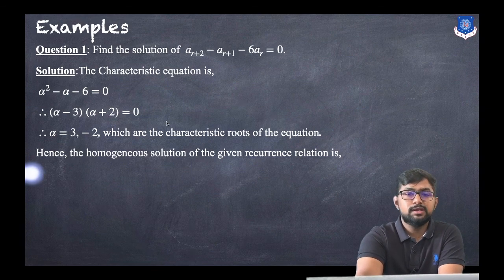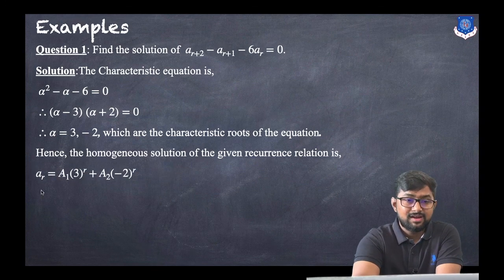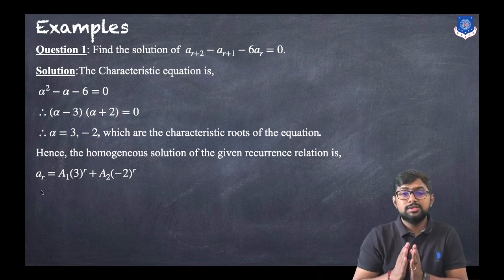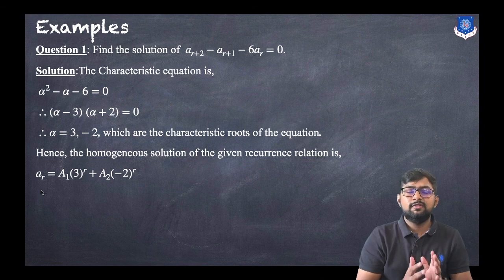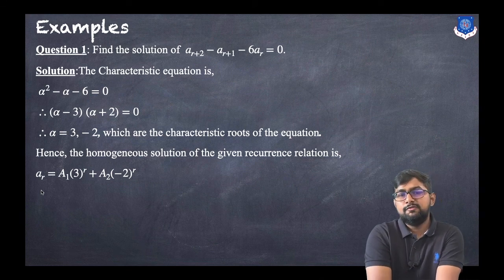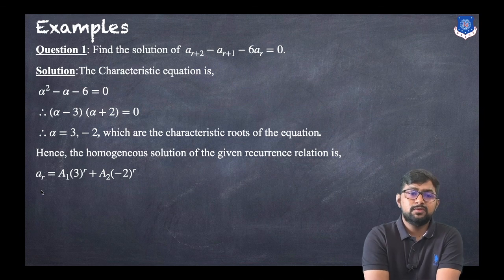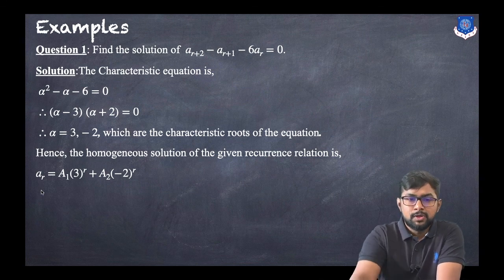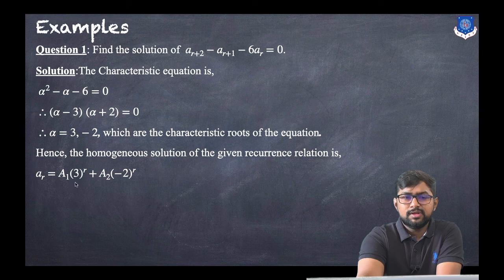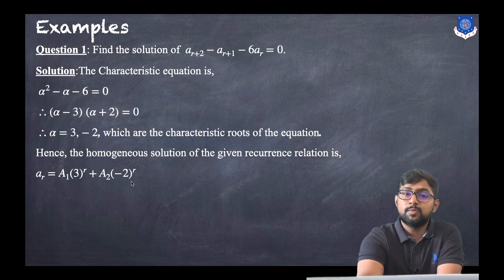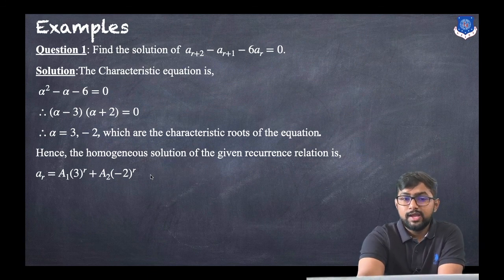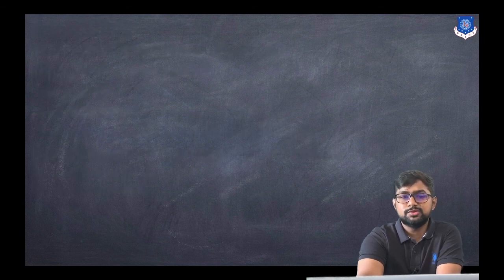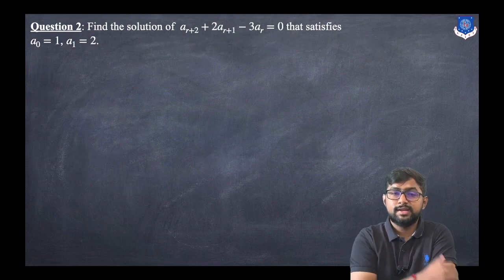The roots 3 and -2 are distinct, so we apply the distinct roots case. The homogeneous solution is: a_r = a_1 * α_1^r + a_2 * α_2^r. Taking α_1 = 3 and α_2 = -2, we get: a_r = a_1 * 3^r + a_2 * (-2)^r. This is the homogeneous solution.